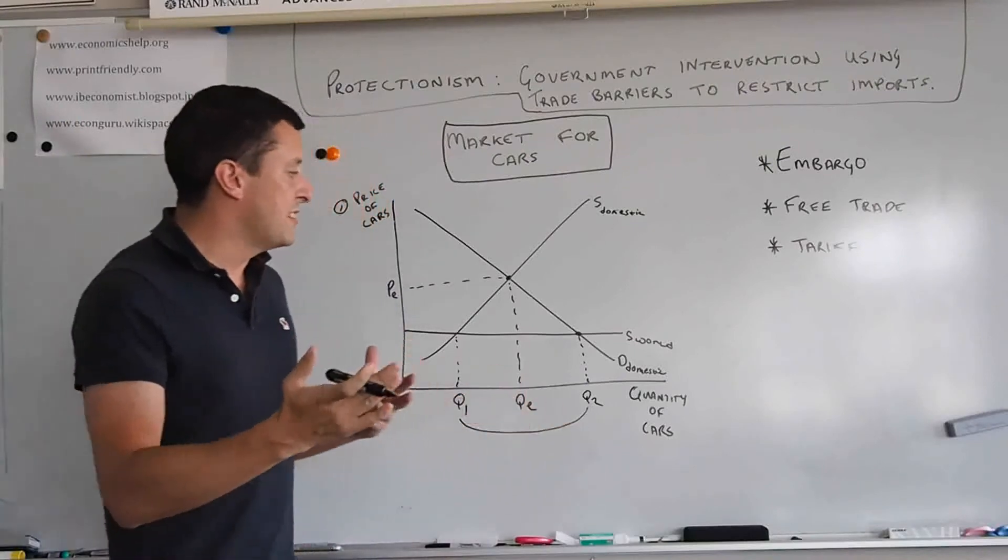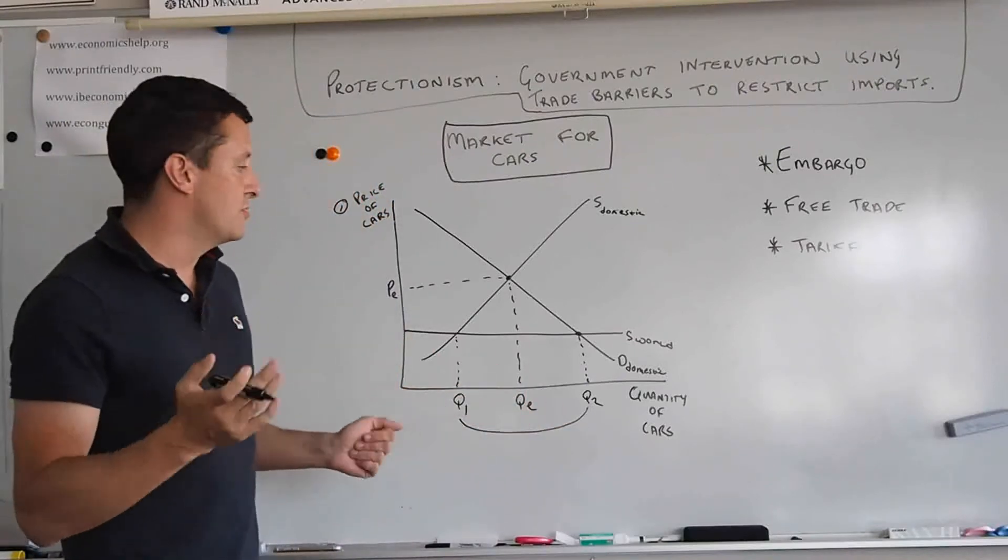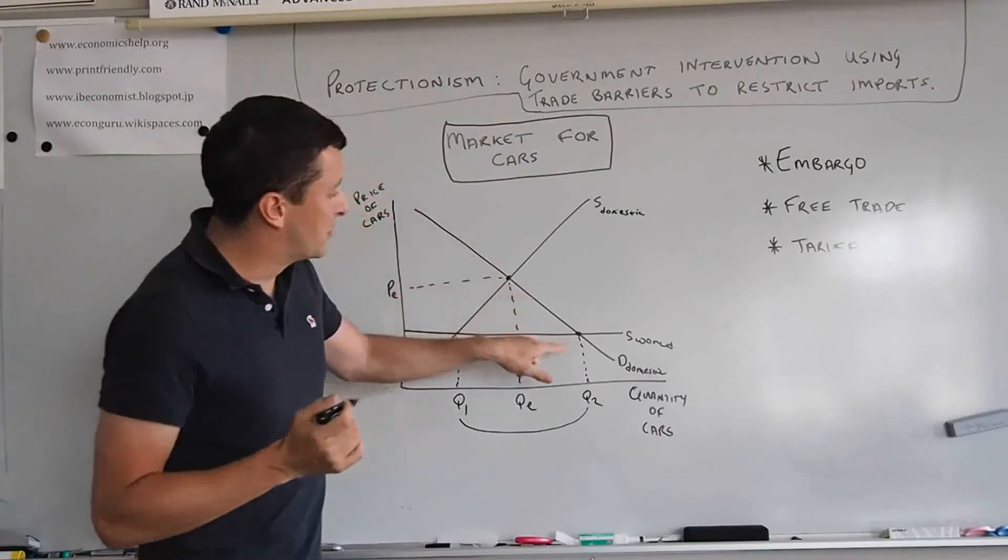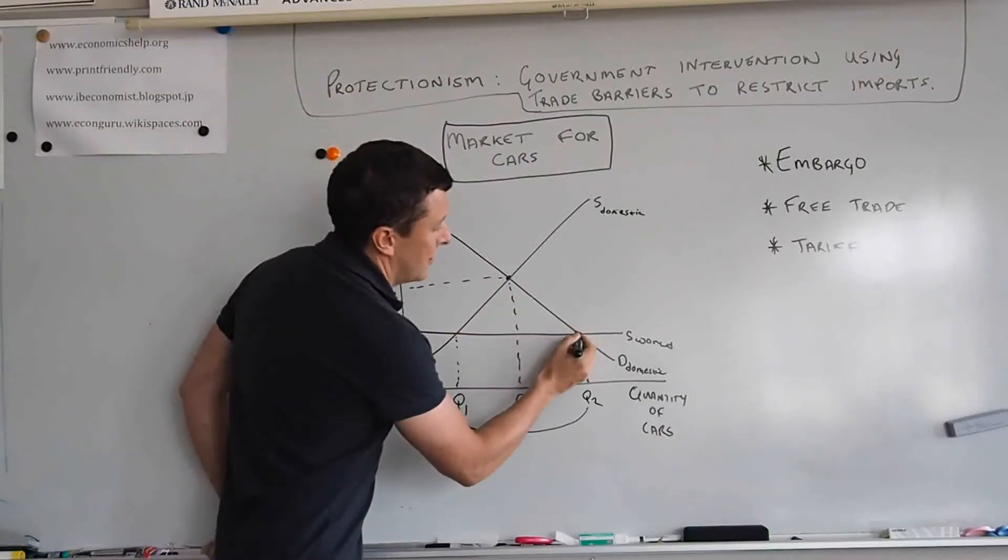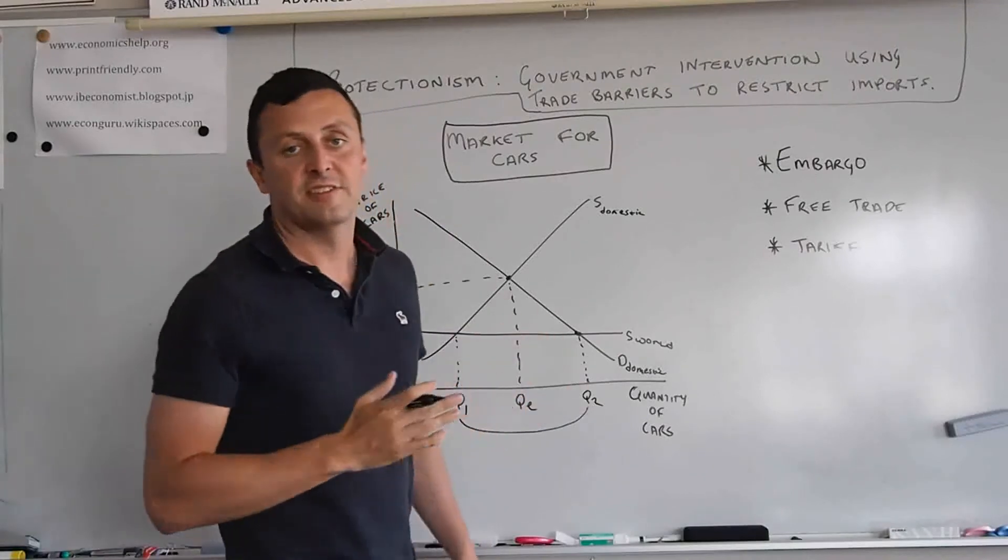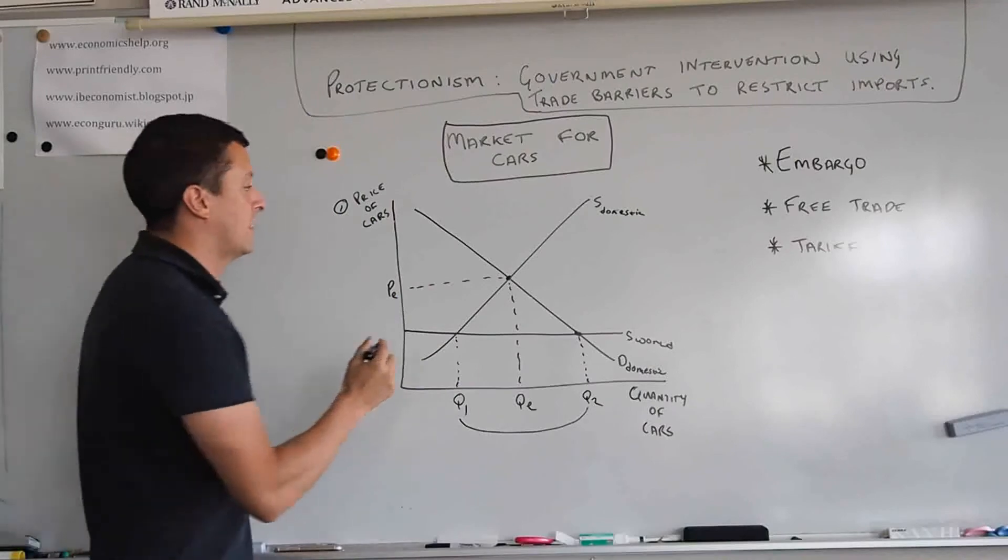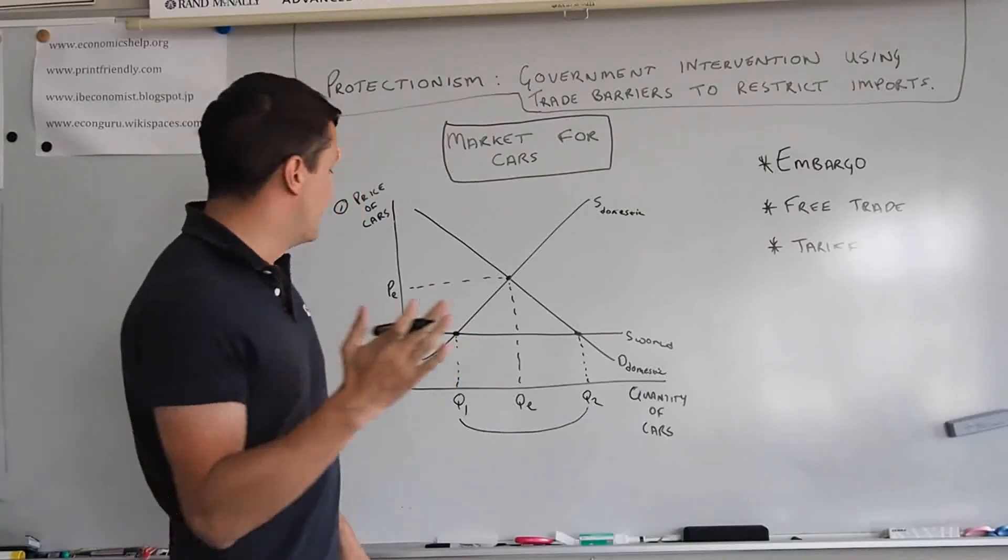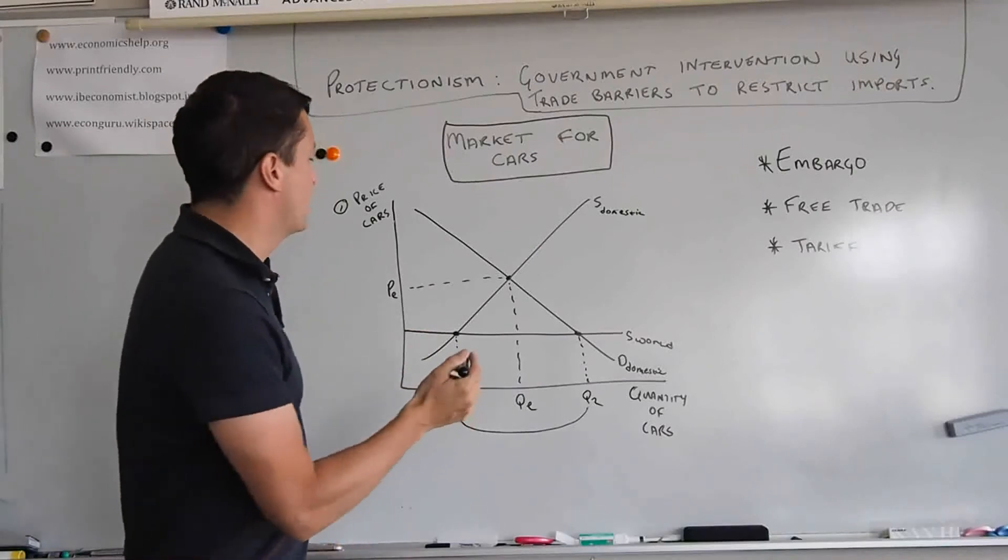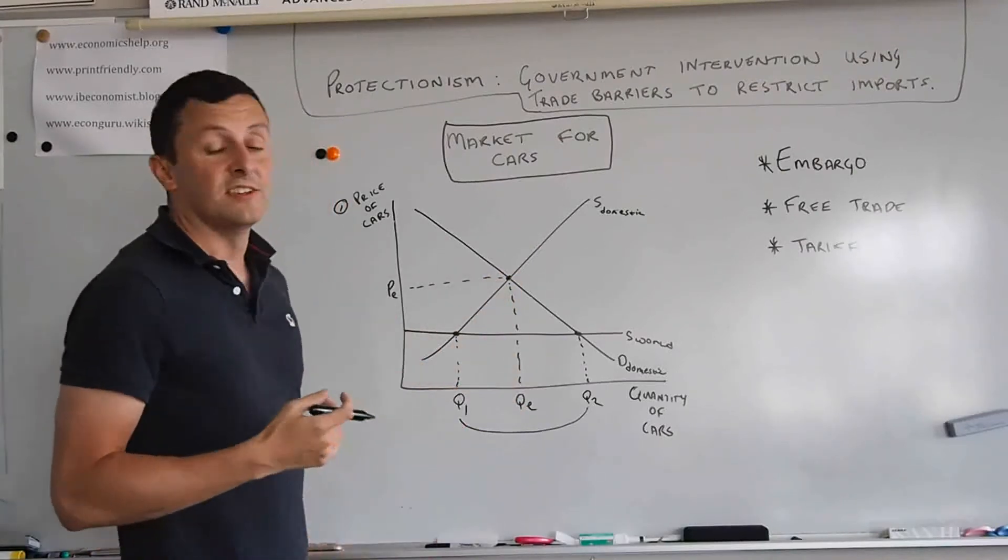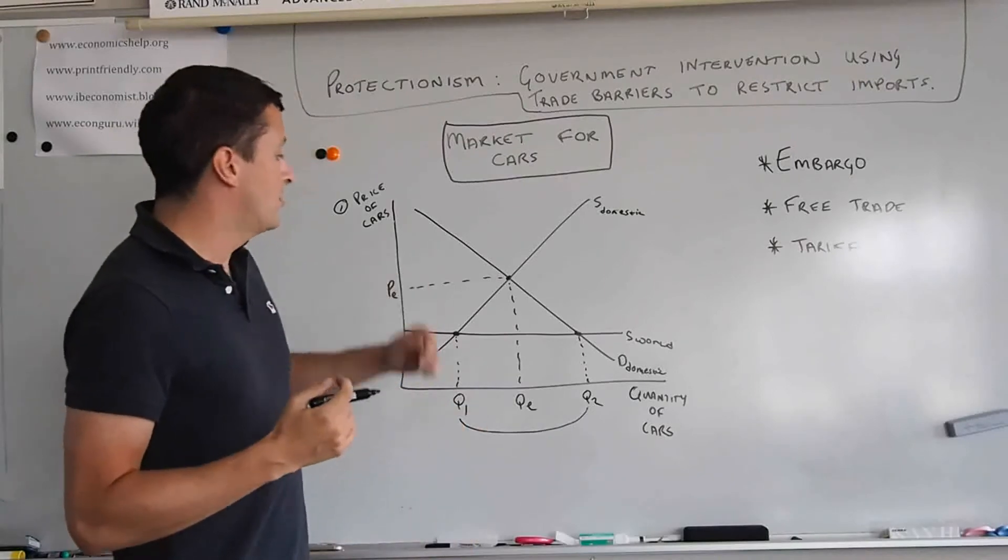Now you may ask, well what's the effect on different consumers and producers? Well, have a think about it. So consumers here are getting a lot more cars for a lot lower price. But at the same time, the producers are not very happy, obviously, because the quantity supplied will decrease and the amount of money they can charge for cars has also decreased.